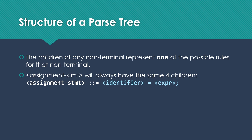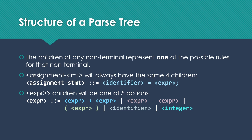The assignment statement in our sample grammar will always have the same four children: an identifier non-terminal, the equal sign terminal, the expression non-terminal, and the semicolon terminal. An expression node, on the other hand, could have any of five different options for its children: expression plus expression; expression minus expression; parentheses with an expression between them; just an identifier as one child; or just an integer as one child.